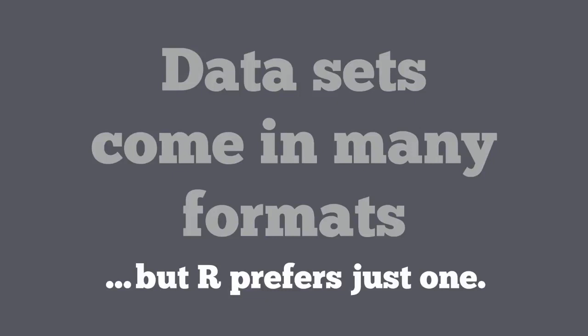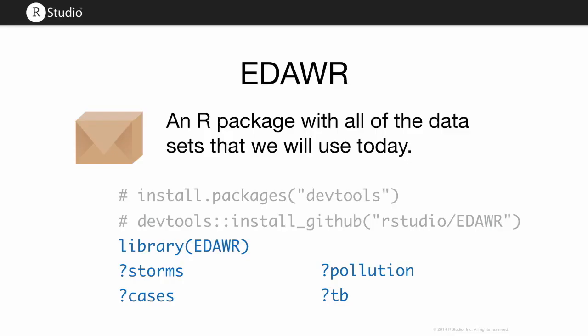Your data sets can come in many different formats, but there's one that R definitely prefers more than the others. I have some toy data sets in a package I've built on GitHub. You can download it if you want. To install it, first install the devtools package, which is on CRAN, and then use the install_github command in devtools to install it from the link rstudio-edawr.